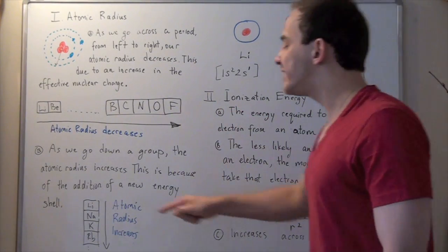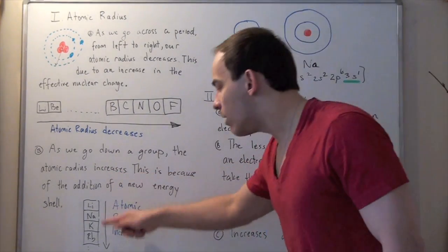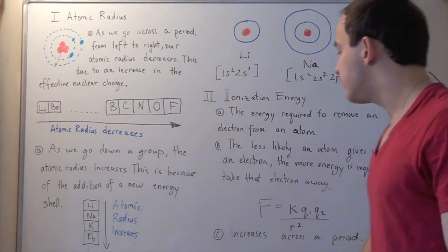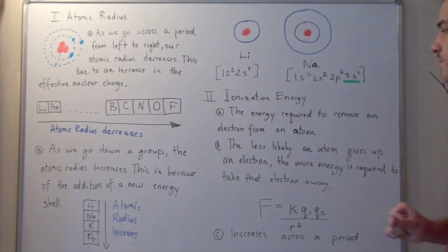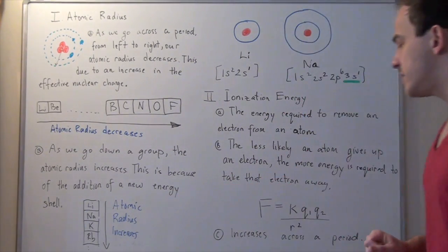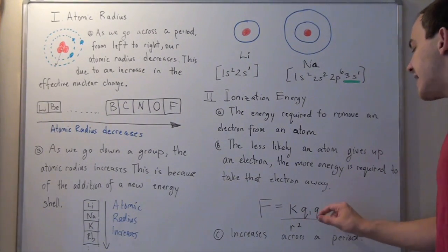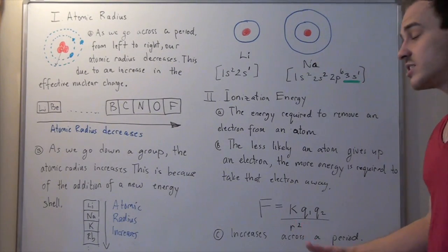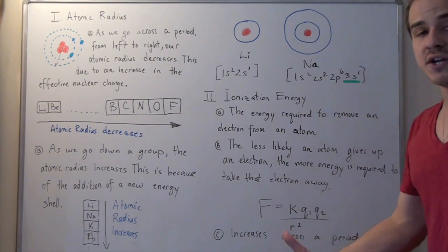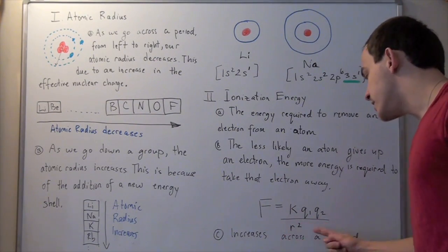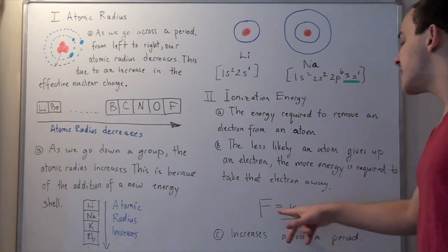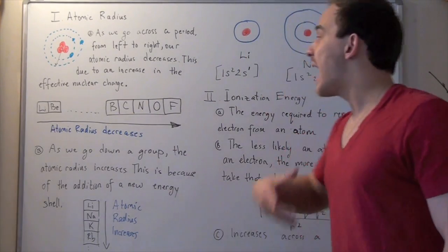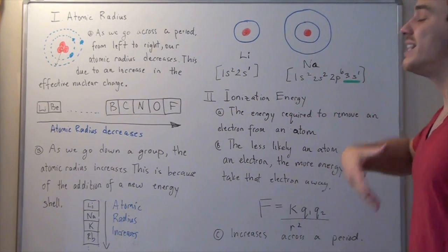What happens when we go down a group? When we go down the group, our atomic radius increases, and that means, going back to Coulomb's law, the distance between Q1 and Q2 — the protons and electrons — increases. So our R also increases. And if our R increases, our denominator increases, which means our force is less. So as we go down a group, our ionization energy tends to decrease.